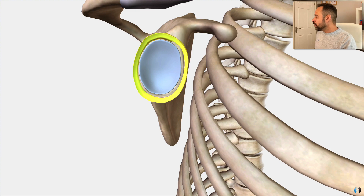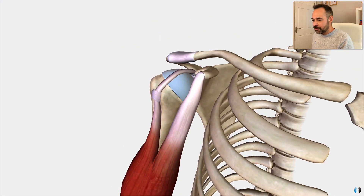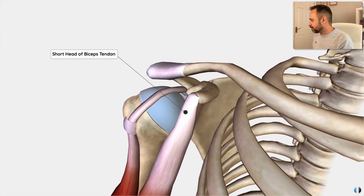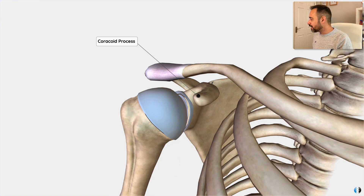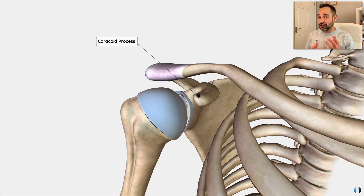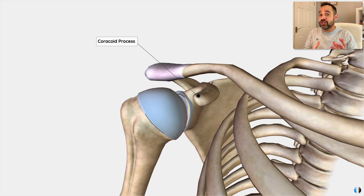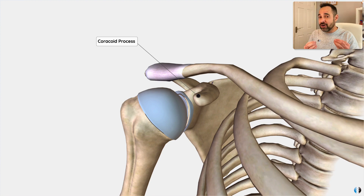Moving on, let's now discuss the short head of biceps. This originates from the coracoid process. There's not too much more to say regarding the short head, because it's not hugely involved in pathology as much as the long head, and that's probably a really important feature to note in itself.